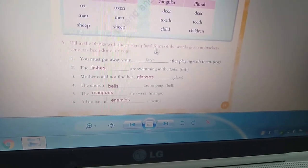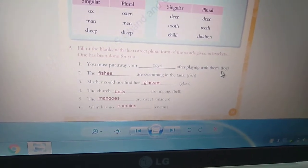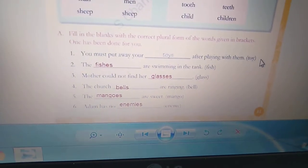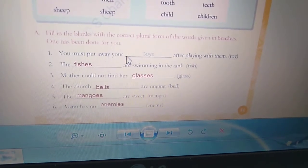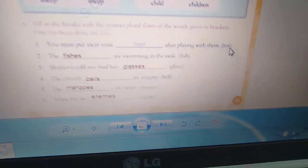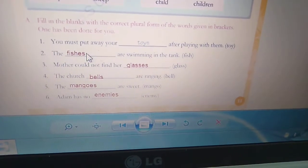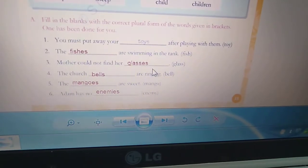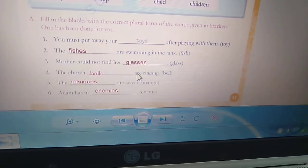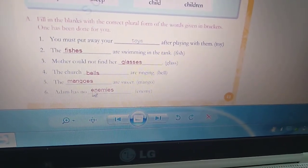Fill in the blanks with the correct plural form of the words given in brackets. Brackets me singular form dhiye hai. Hum ne singular form ko plural form me change karna hai. First one is, you must put away your toys after playing with them. Bracket me toy tha, to hum ne singular se plural form me change kiya. Toys. The fishes are swimming in the tank. Mother could not find her glasses. The church bells are ringing. The mangoes are sweet. Adam has no enemies.